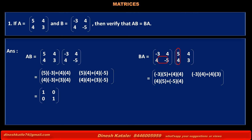Now multiplying elements of the second row of matrix B by the first column of matrix A, we get 4 into 5 plus minus 5 into 4. Similarly, multiplying elements of the second row of matrix B by the corresponding elements of the second column of matrix A, we get 4 into 4 plus minus 5 into 3.